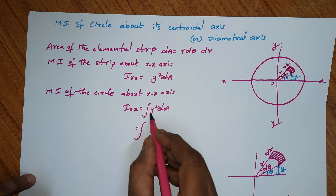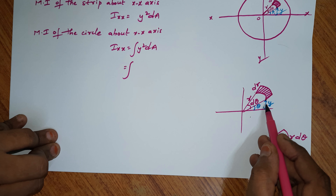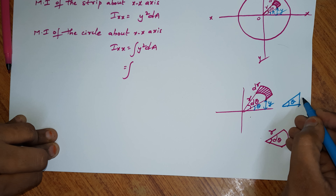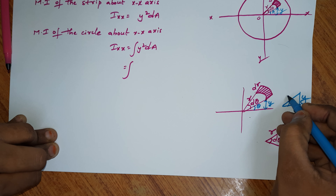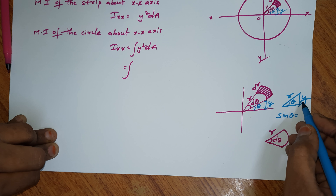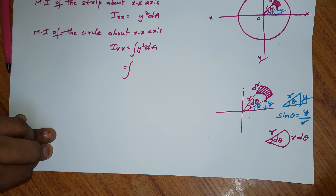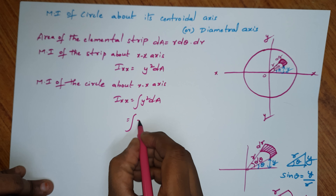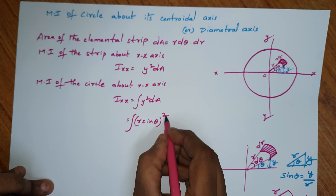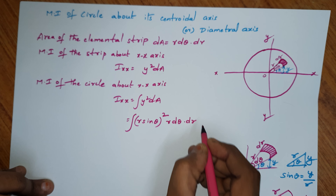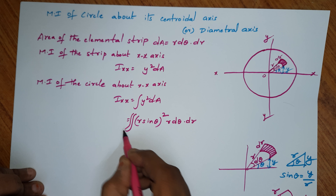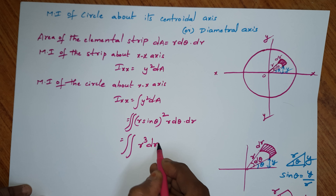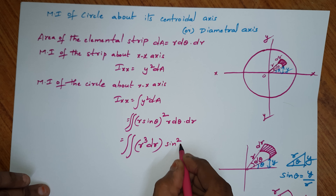Now we need to find y. From the small triangle, with angle θ, opposite side y, and hypotenuse small r, we get sin θ = y/r, so y = r·sinθ. Substituting: Ixx = ∫(r·sinθ)²·dA = ∫r²sin²θ · r·dθ·dr. Using double integration, this becomes ∫∫r³·dr · sin²θ·dθ.